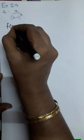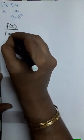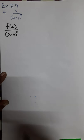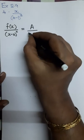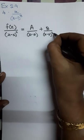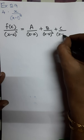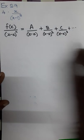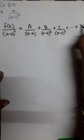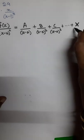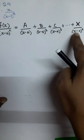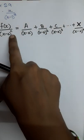Suppose we have f(x) and in the denominator we have (x minus a) to the power n. Then to resolve into partial fractions, we write: A by (x minus a), then B by (x minus a) squared, then C by (x minus a) cubed, and so on. The last term is the alphabet divided by (x minus a) to the power n. The number of fractions is decided by the power of the denominator.